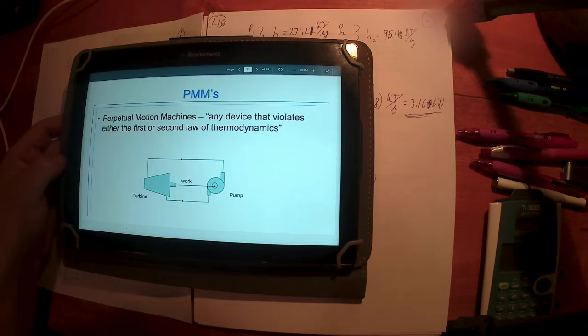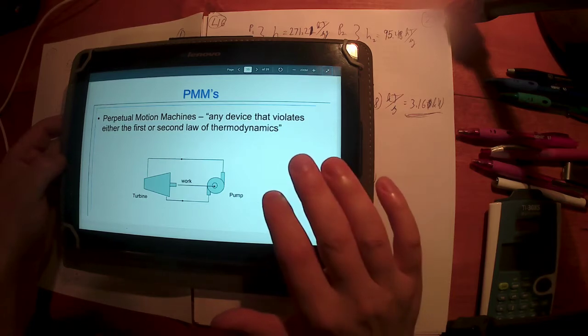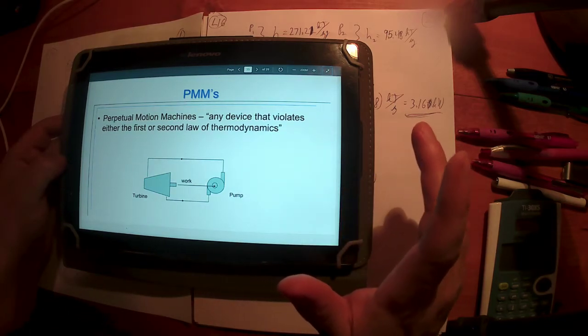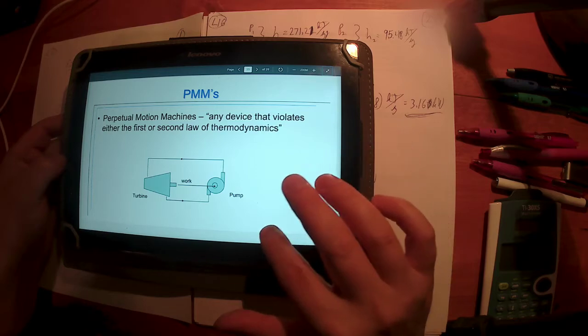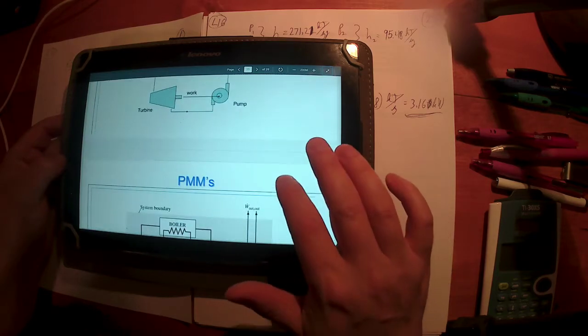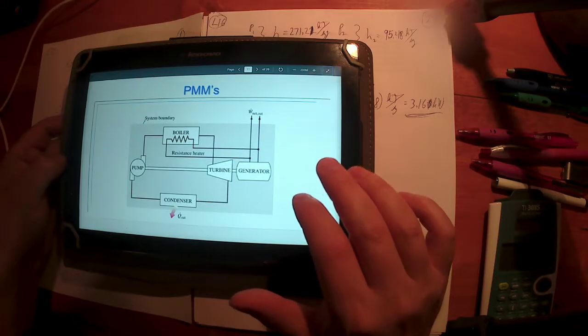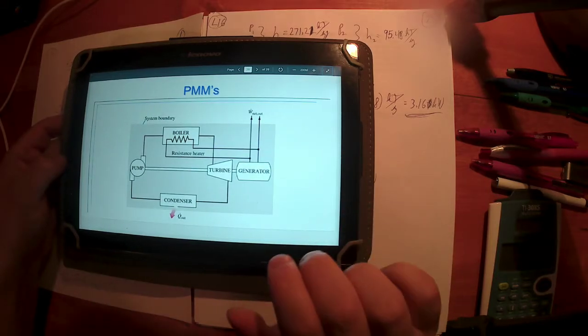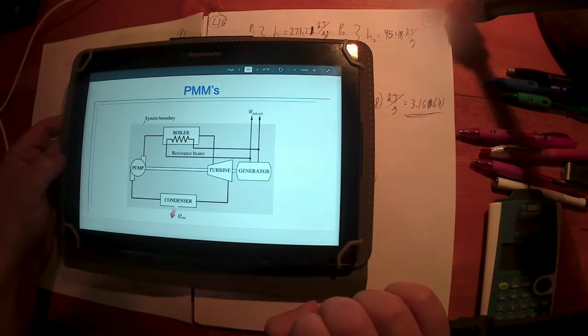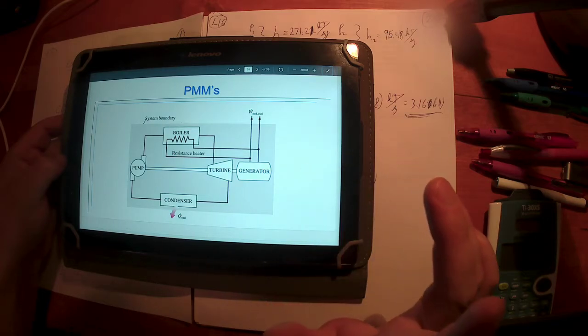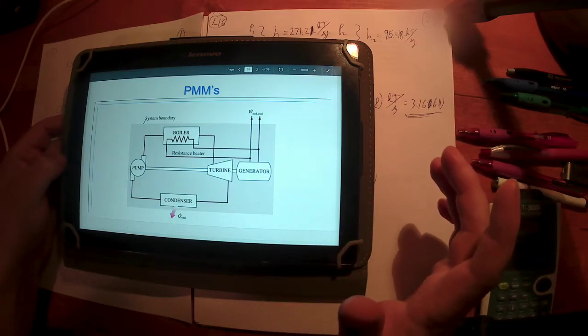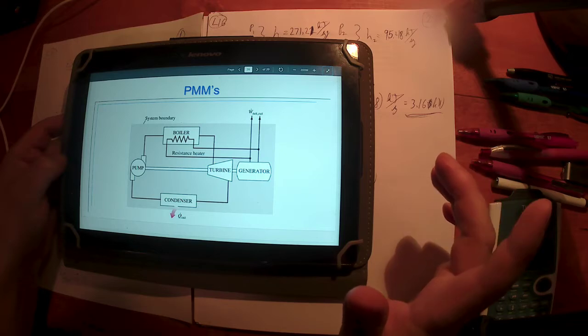What we know today is we can't do this because of the first and/or the second law. A perpetual motion machine is any device that violates either the first or second law of thermodynamics. In theory, if we could violate either the first or second law of thermodynamics, you could have a machine that can operate perpetually with no outside influence. We do have a lot of devices that we operate for long periods of time, what might appear to be perpetually, but that's only because we're providing an exterior amount of energy.